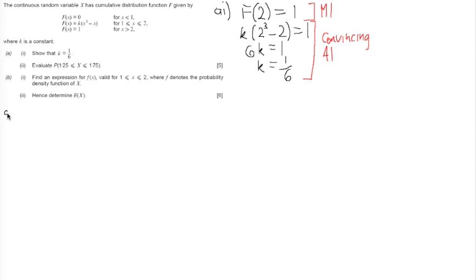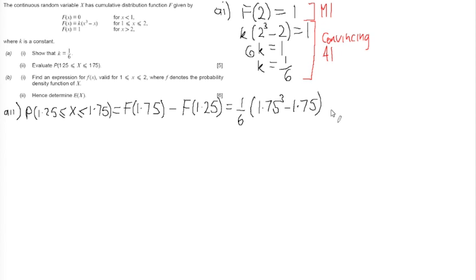Let's have a look at A part 2. A part 2 says evaluate probability x lies between 1.25 and 1.75. So we can just use the cumulative distribution function straight away for this. Remember, this is a little bit like your Poisson tables and binomial tables. And do probability of 1.75, sorry, that shouldn't be a probability, that should actually be f of 1.75, so it's the probability of x less than or equal to 1.75, minus f of 1.25. So we're going to get 1 sixth times 1.75 cubed minus 1.75,